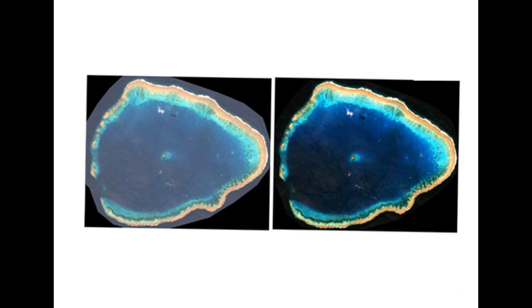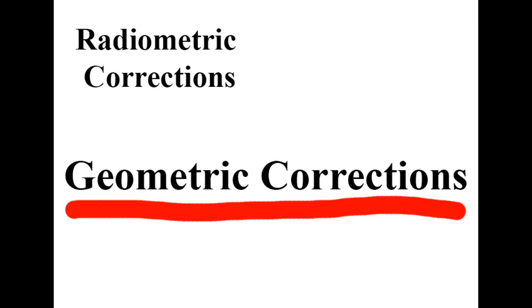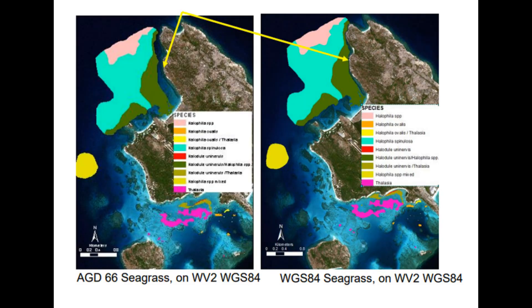Other than radiometric corrections, there are also geometric corrections. Radiometric covers absolute and relative correction, while geometric correction is something different — it's not atmospheric and topographical like the first one. Geometric corrections are essentially when we align things to get some semblance of where they physically are, to get those pixels to tell us where they actually are. In mapping, you should be concerned with three things: the datum, the projection, and the coordinate system.